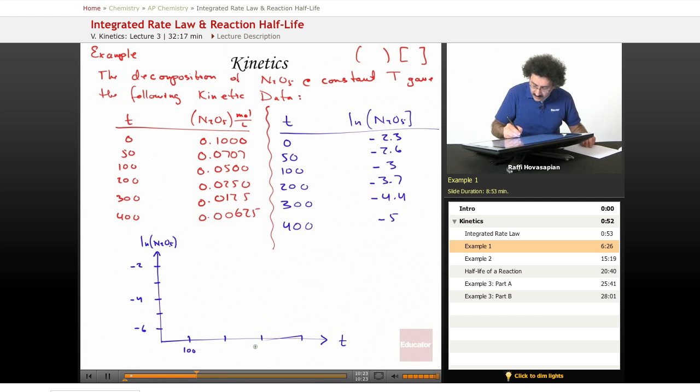This is 100 seconds. So 100, 200, 300, and 400 seconds. When we plot this data, we actually end up getting something, let's go down to about right there. Believe it or not, we actually do end up with a straight line with all of these different points.